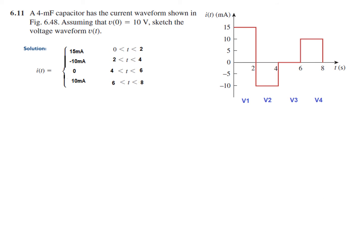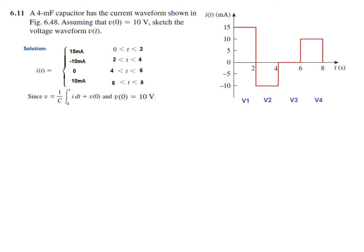I have given the four voltage segments different names: V1, V2, V3, and V4. We know the formula for capacitor voltage: V = (1/C) × integral of the current, plus the initial voltage. The initial voltage is given as 10 volts, so we will use this equation to calculate all four voltages.